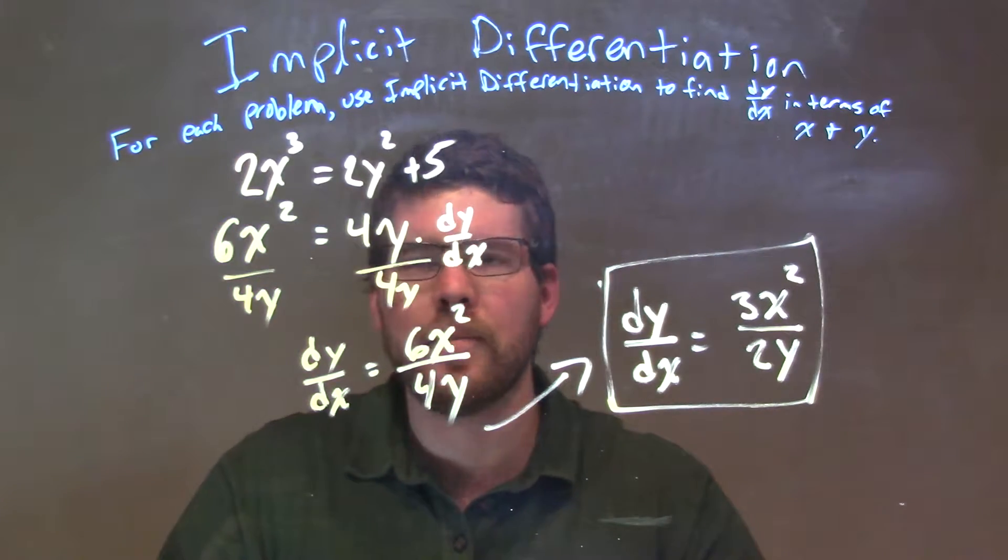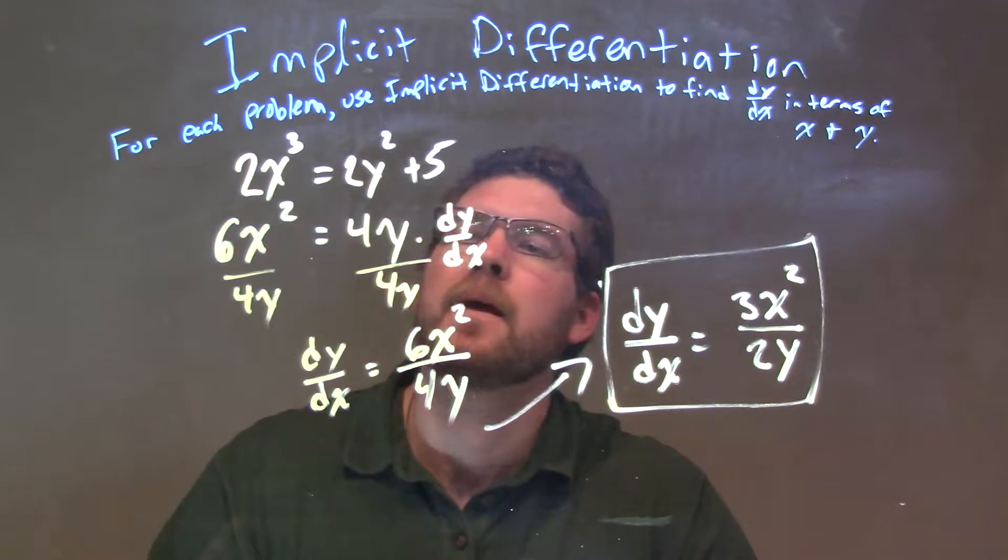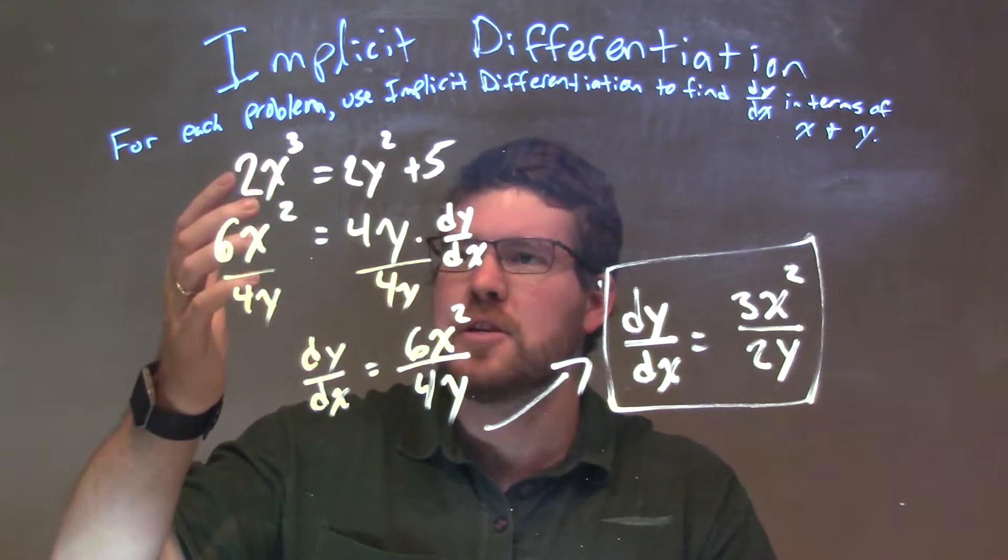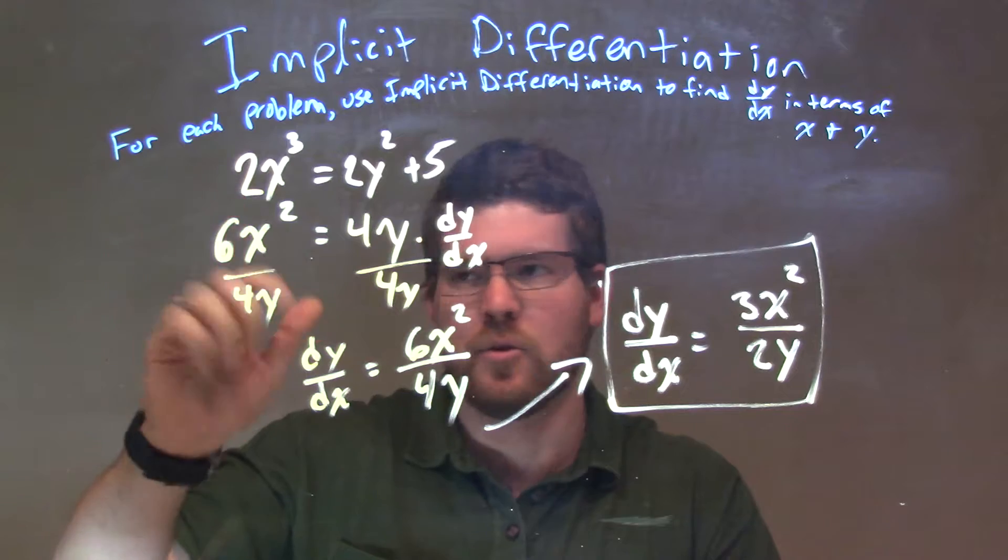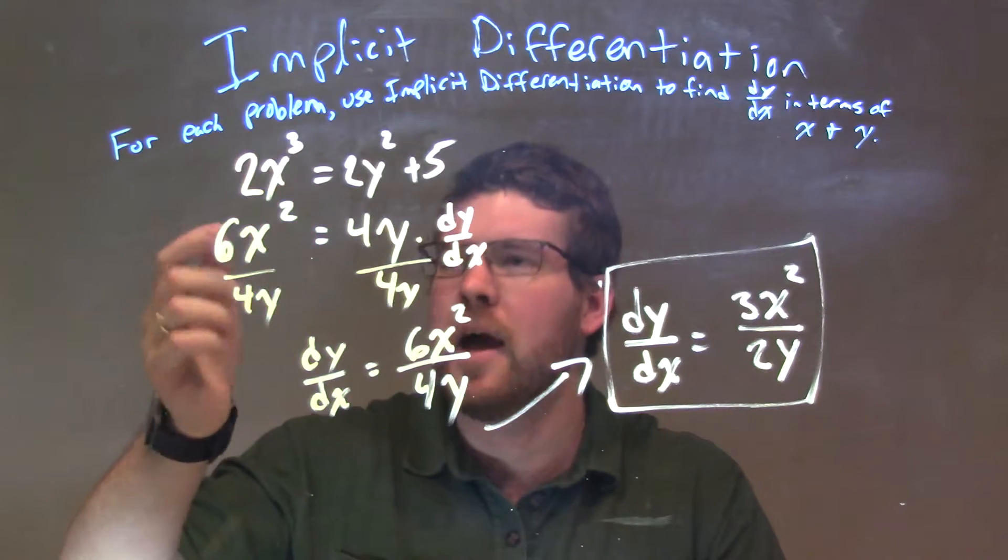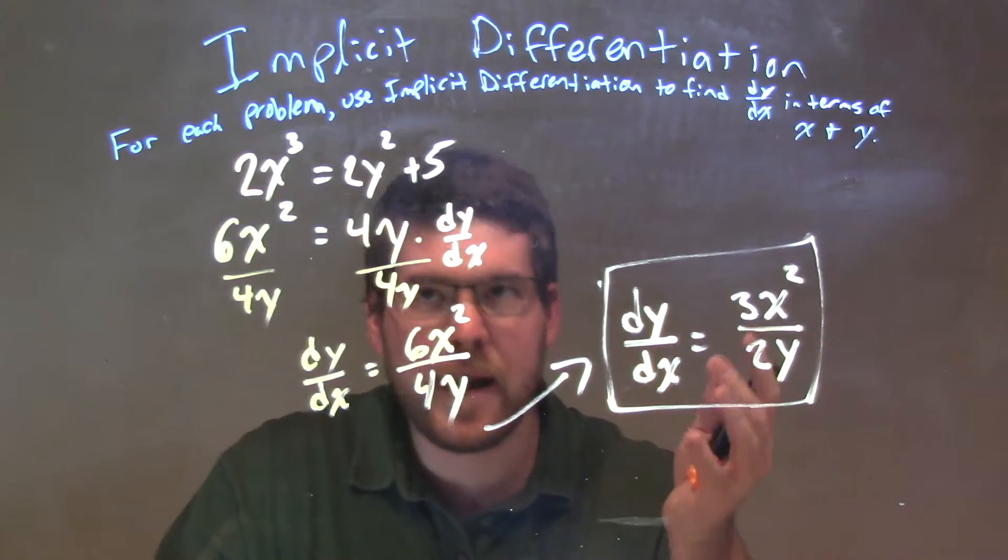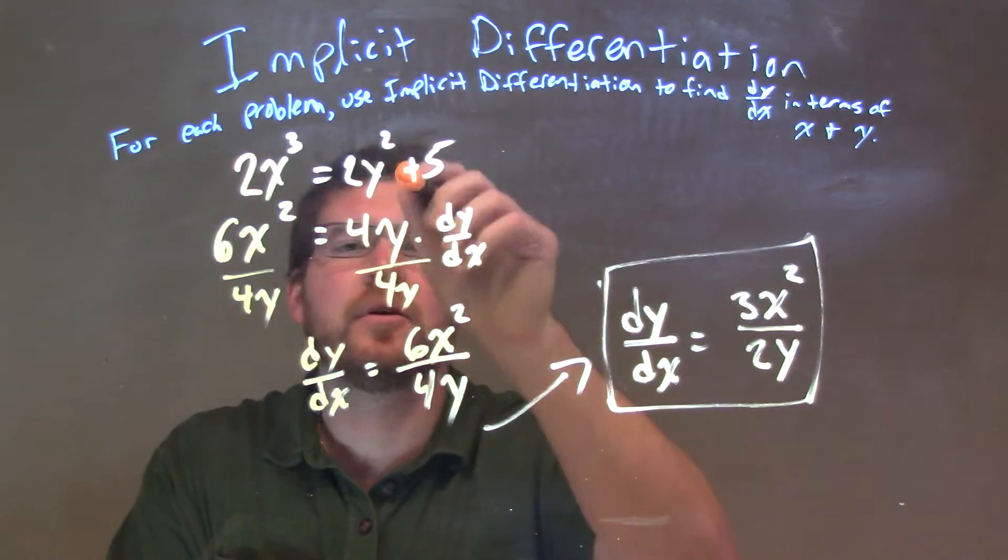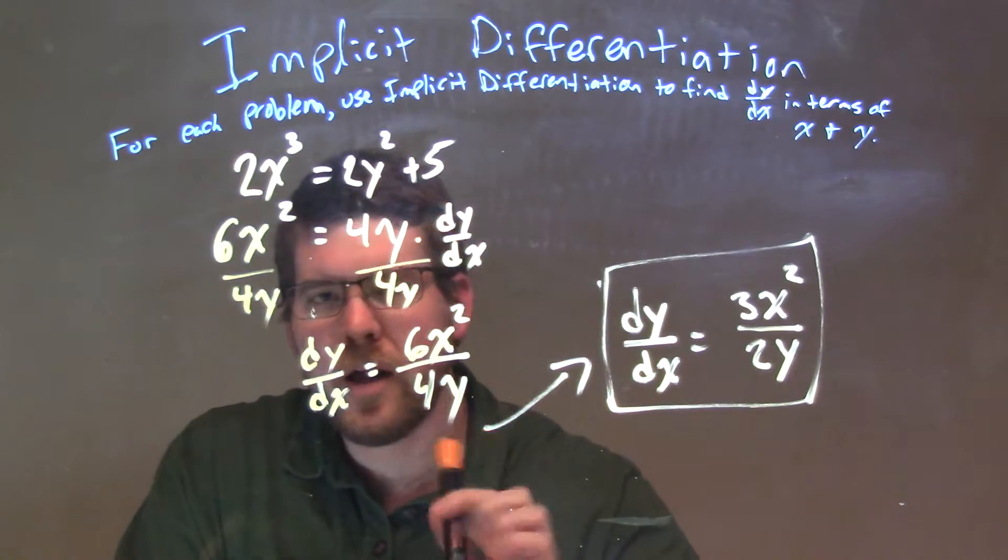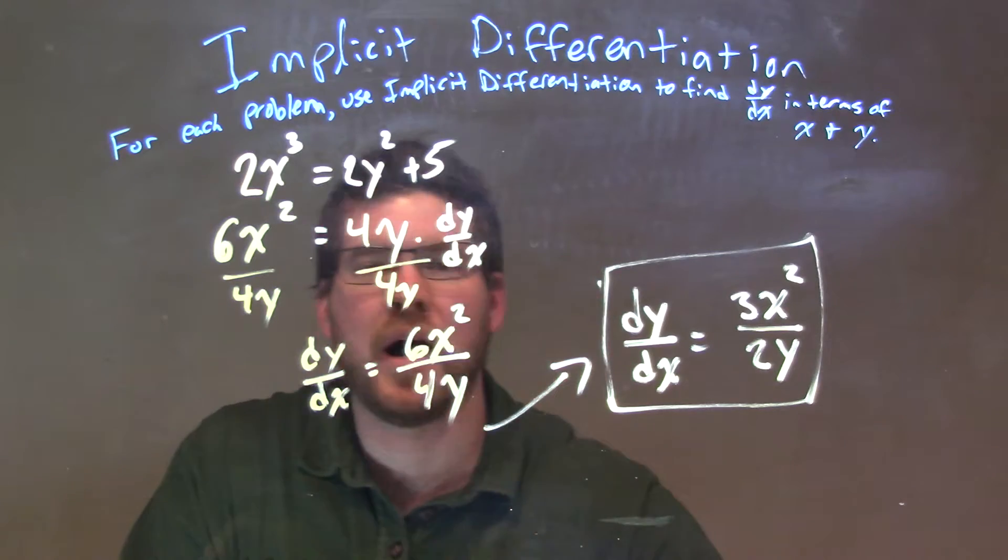We're given 2x³ = 2y² + 5. I want to use implicit differentiation, so I derive the left just like normally, which gives 6x². On the right-hand side, I treat y just like I would an x: 2 comes down as 4, so y² becomes y to the first power. But then I multiply that by dy/dx.